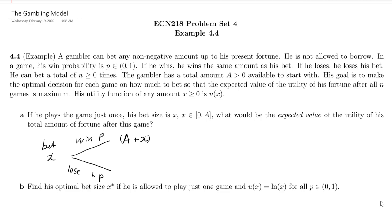If he loses, then we have A minus x. And that's why we always say that x is between 0 and A. He can only bet part of his fortune that's available to him.